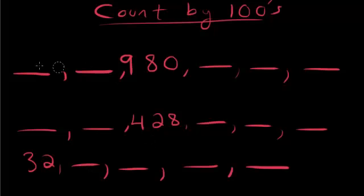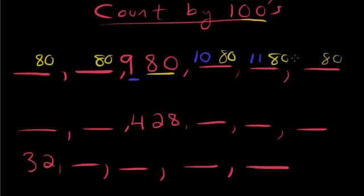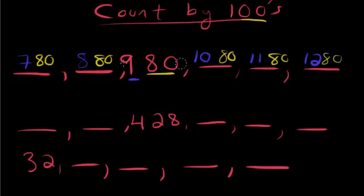For the first example, since we're counting by 100, there are two zeros, so you hold on to the last two numbers — you keep 80 throughout. Everything on the left side changes: the 9 becomes 10, then 11, then 12, giving us 1,080; 1,180; 1,280. Going backwards, the 9 becomes 8, then 7. By the way, we'll do a lesson later on reading large numbers, so for now just understand the patterns.